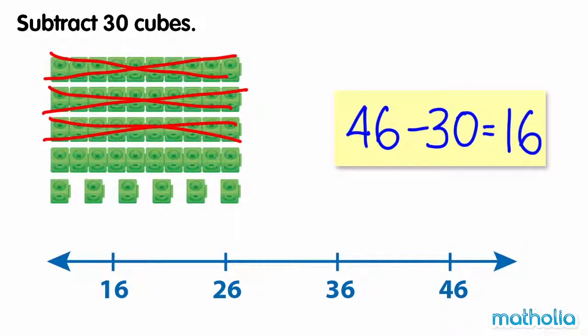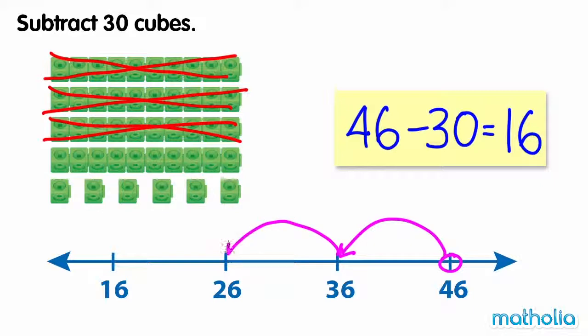We can also subtract by starting at 46 and counting back three tens: 46, 36, 26, 16.